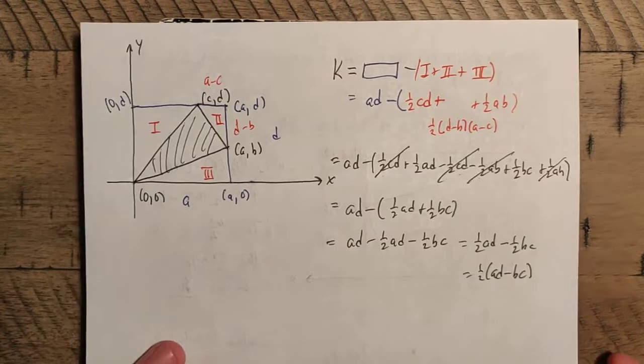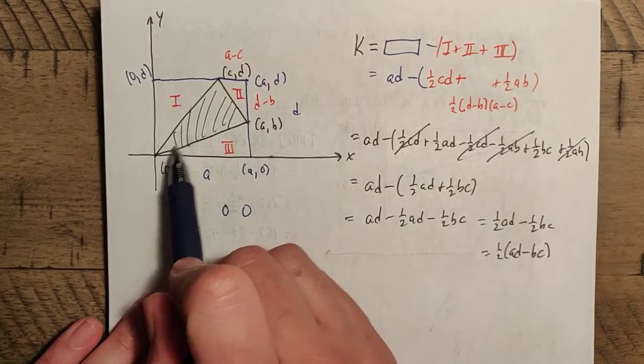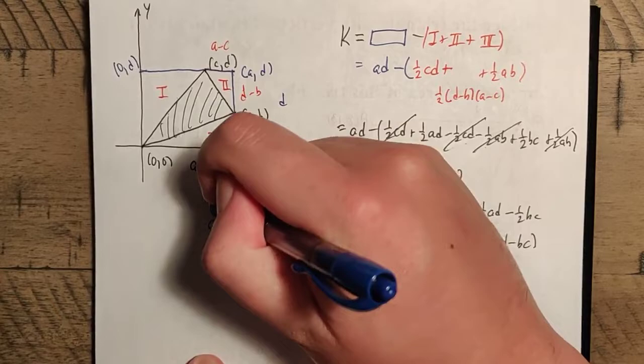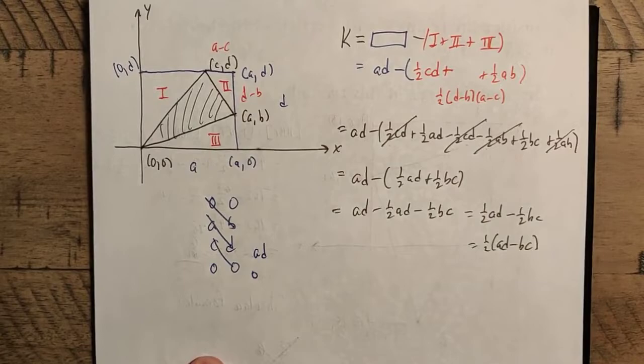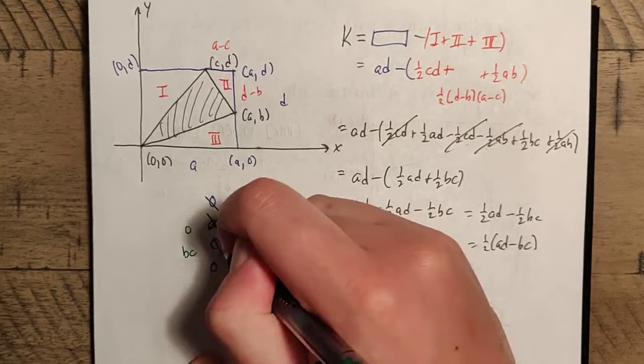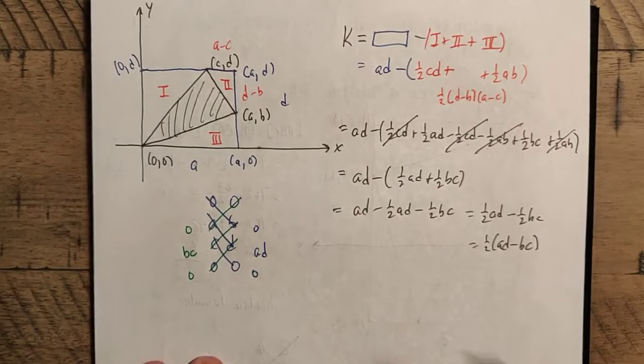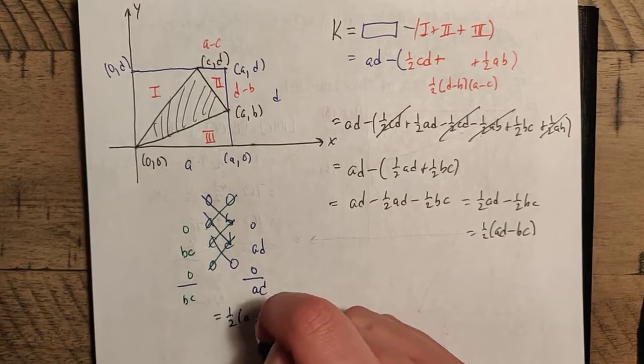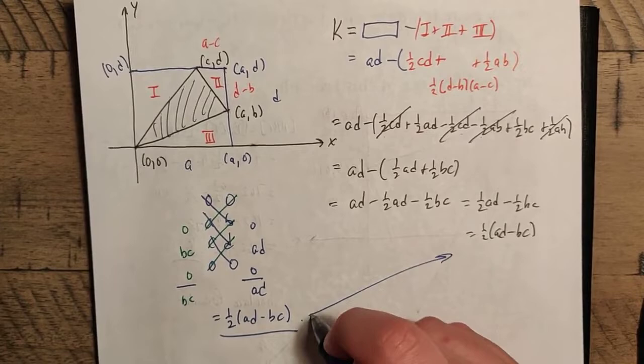Now let's verify this using the shoelace formula. Starting at (0, 0) and going around the figure: (0, 0) → (a, b) → (c, d) → back to (0, 0). Applying the shoelace procedure: 0·b − a·0 + a·d − c·b + c·0 − 0·d = ad − bc. Taking half gives ½(ad − bc), which indeed matches what we derived.